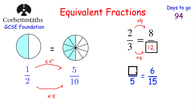The second equivalent fraction: blank over 5 equals 6 over 15. To get from 15 to 5, divide by 3. So divide 6 by 3 to get 2. The answer is 2 fifths.